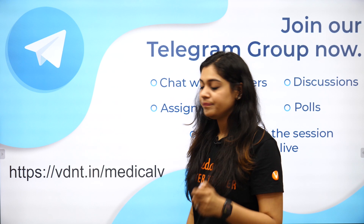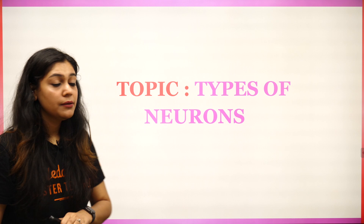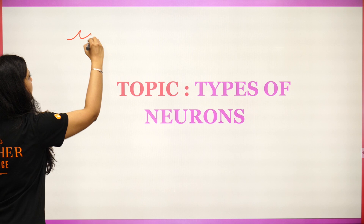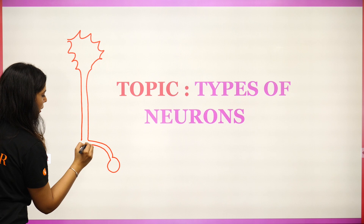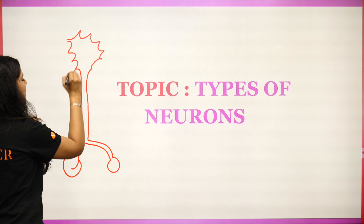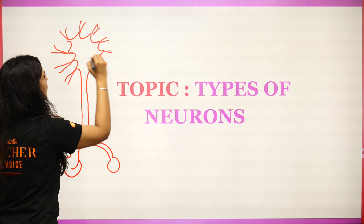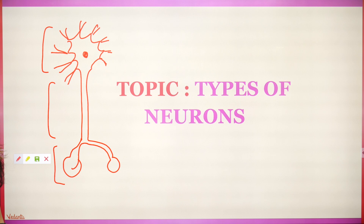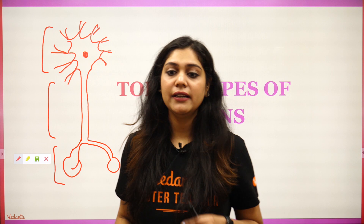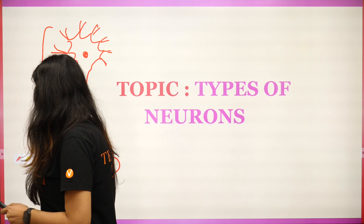Types of Neurons. You know the structure, guys — I will make a structure just to revise a little. This is my cell body, this is the axon, and these are axon terminals. These are all dendrites. This is my nucleus. So today we are going to do types of neurons as given in NCERT Neural Control and Integration chapter. Let's come up with a quick table.